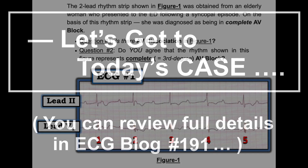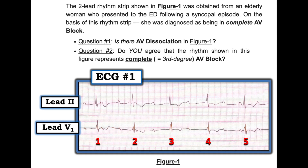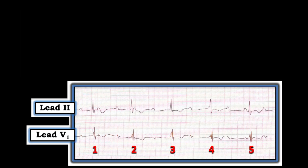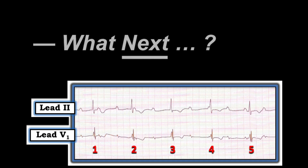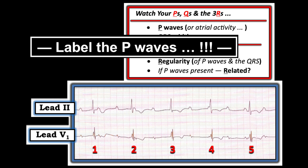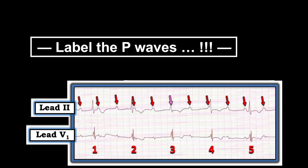This is the case — ECG blog number 191. This two-lead rhythm strip was obtained from an older woman who presented to the emergency department after syncope. Is the rhythm complete AV block? Watch your P's and Q's and the three R's. Look for P waves or atrial activity; is the QRS wide or narrow? Isn't it much easier to look at this once I've labeled the P waves?